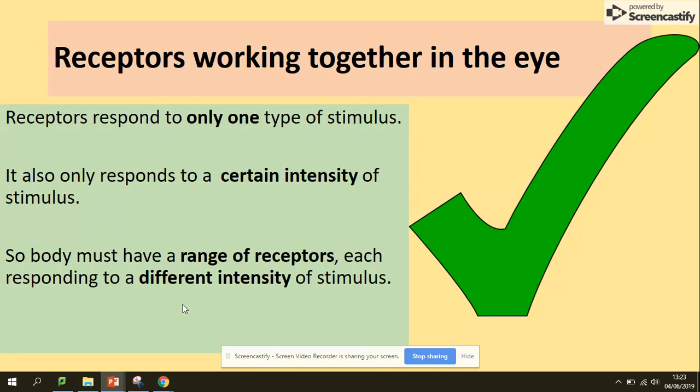Receptors working together in the eye respond only to one type of stimulus, and also respond to a certain intensity of the stimulus. So the body must have a range of receptors, each responding to a different intensity of stimulus.